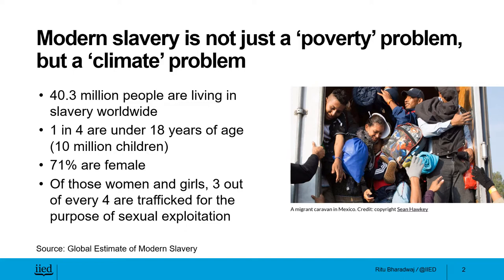According to the global estimate of modern slavery, 40.3 million people worldwide are living in slavery, 71% of which are women, and one in every four victims are children under the age of 18. Clearly, the picture is very grim. What is crucial to understand is that while several socioeconomic, cultural, and institutional factors shape the risk to modern slavery, they are increasingly considered to be made worse by climate change impacts.